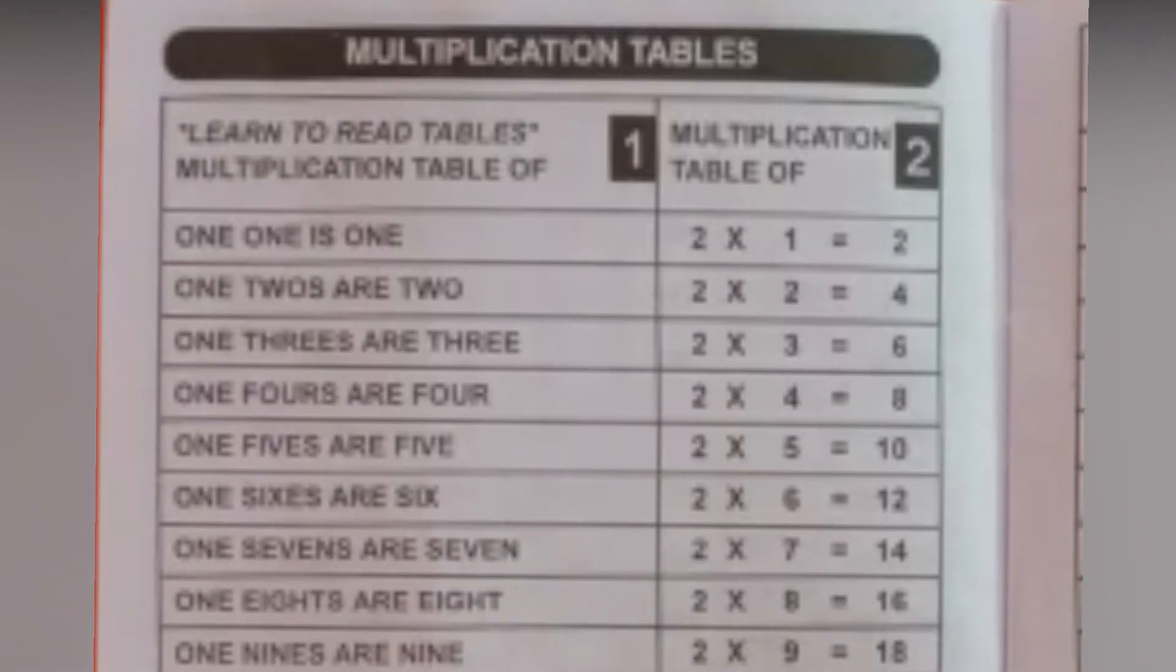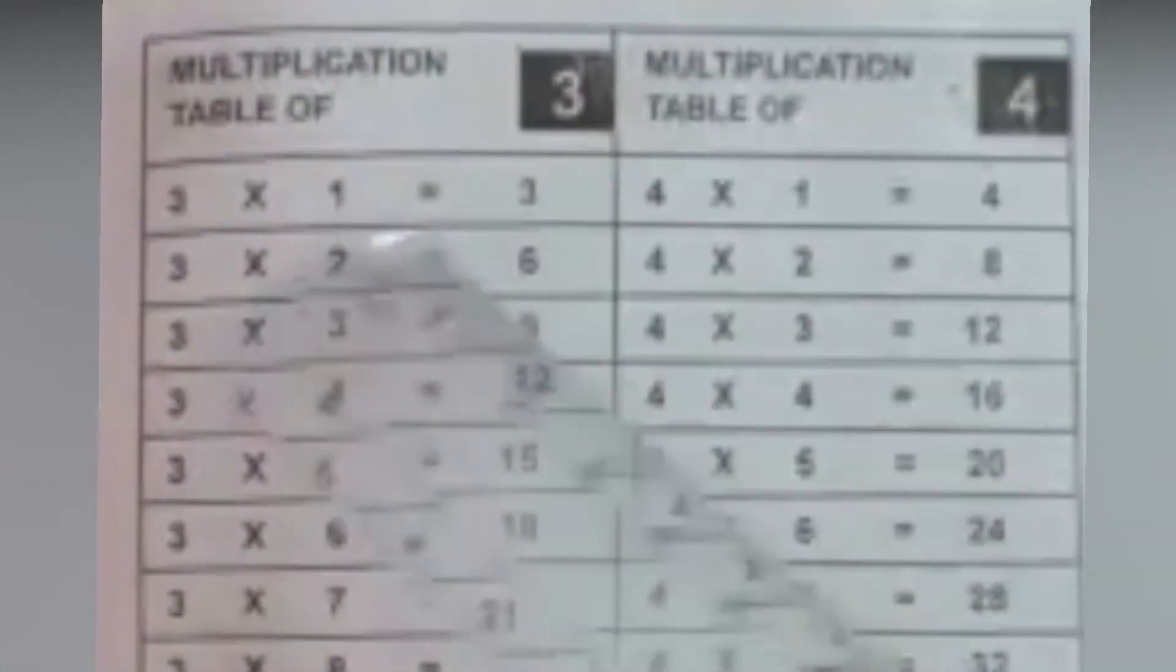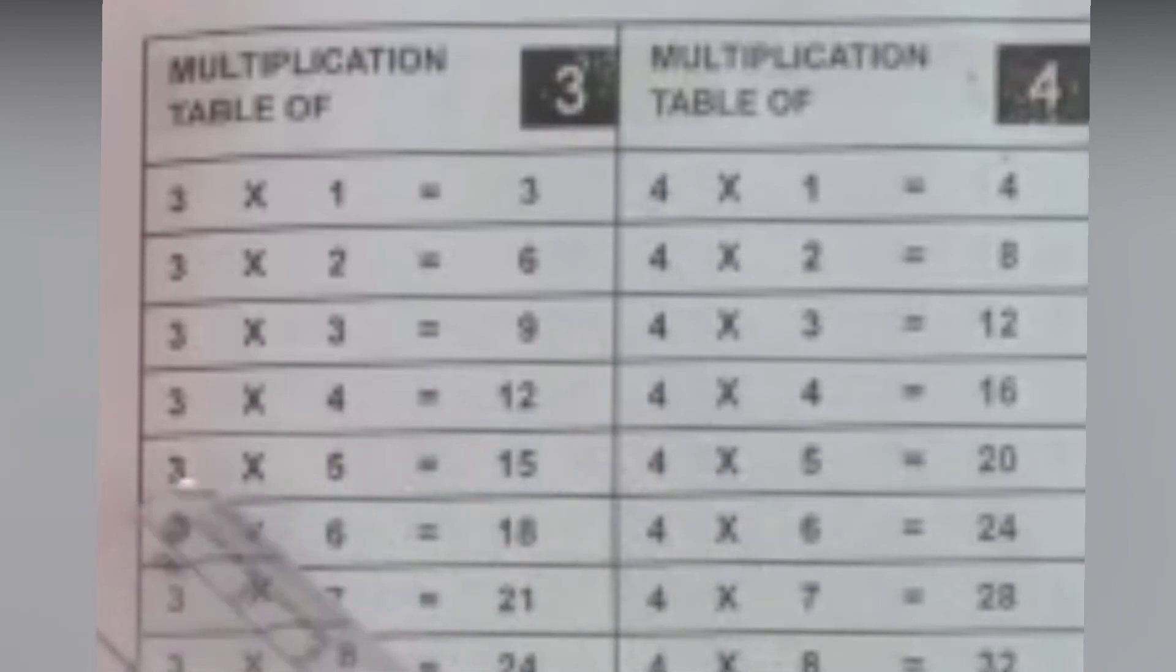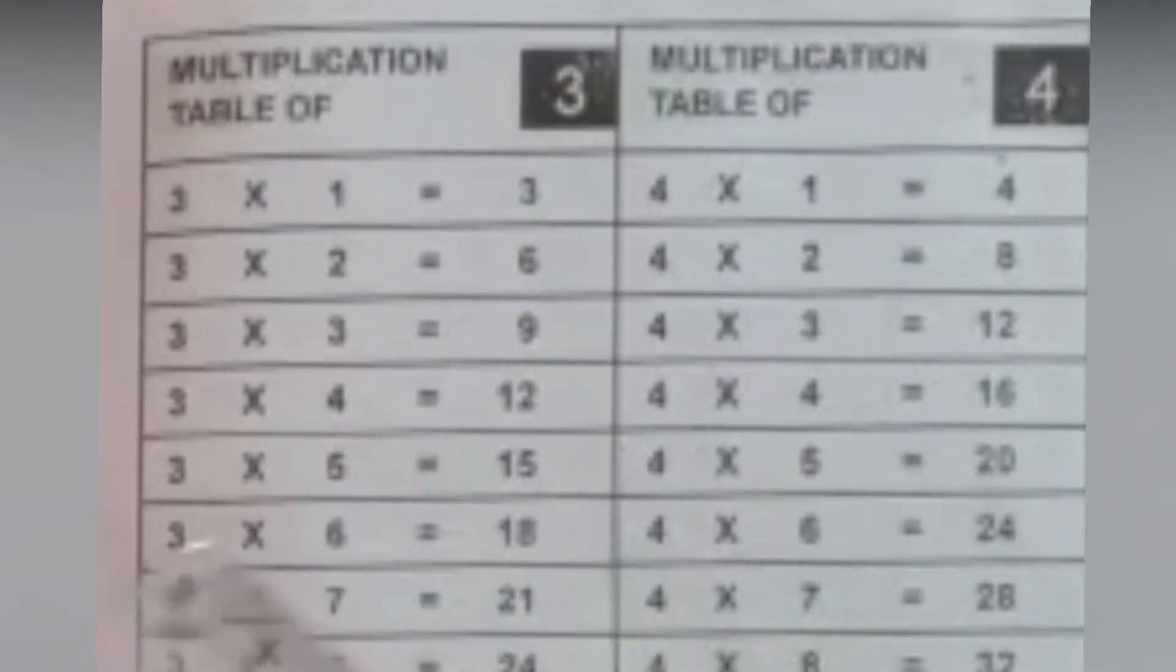Now let us see multiplication table of 3: 3 ones are 3, 3 twos are 6, 3 threes are 9, 3 fours are 12, 3 fives are 15, 3 sixes are 18, 3 sevens are 21, 3 eights are 24, 3 nines are 27, 3 tens are 30.